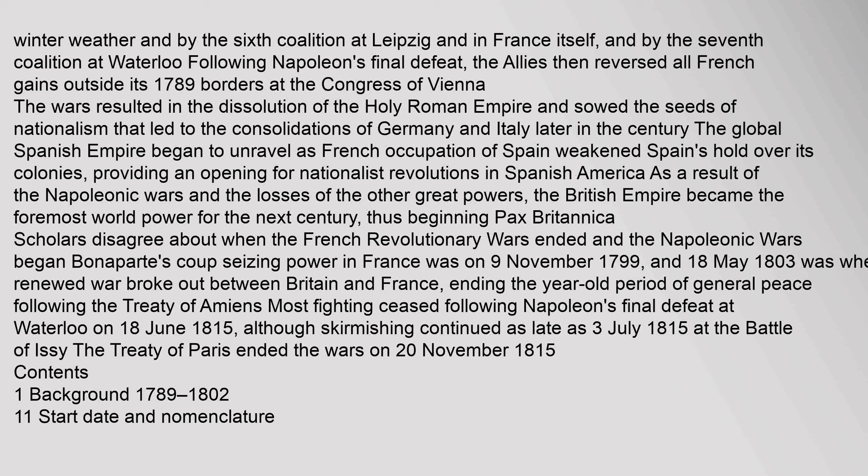The global Spanish Empire began to unravel as French occupation of Spain weakened Spain's hold over its colonies, providing an opening for nationalist revolutions in Spanish America. As a result of the Napoleonic Wars and the losses of the other great powers, the British Empire became the foremost world power for the next century, thus beginning Pax Britannica. Scholars disagree about when the French Revolutionary Wars ended and the Napoleonic Wars began. Bonaparte's coup seizing power in France was on 9 November 1799, and 18 May 1803 was when renewed war broke out between Britain and France. The Treaty of Paris ended the wars on 20 November 1815.